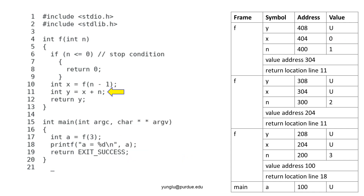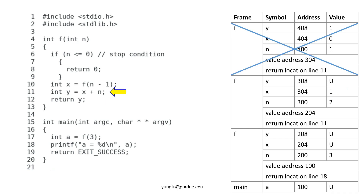Line 11 adds the values of x and n. In this frame, the value of x is 0 and the value of n is 1. Thus, the value of y is 1. The program moves to line 12 and returns the value of y. The value address is 304. Thus, the value at that address is modified to 1. The return location is line 11 and the program continues at this line. The top frame is popped.